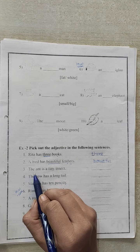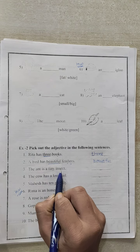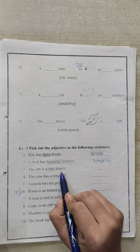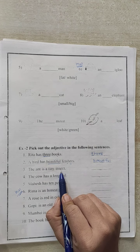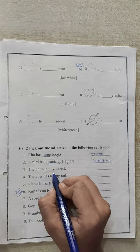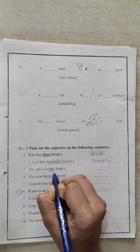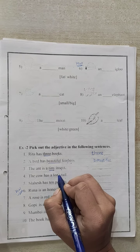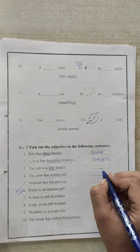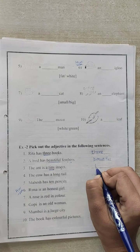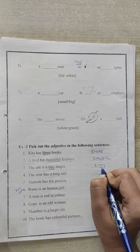Number 3. The ant is a tiny insect. Now which type of insect is the ant? In this sentence, tiny describes the insect. So tiny is a describing word. So we will write here in the blank.